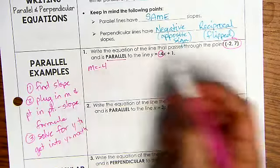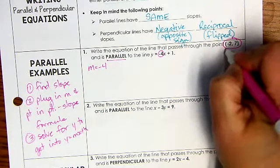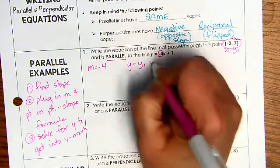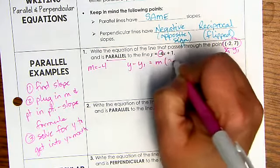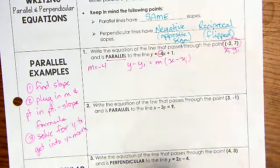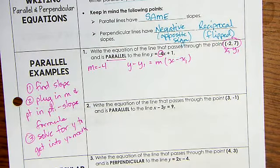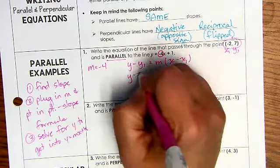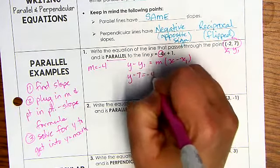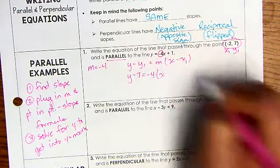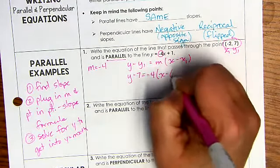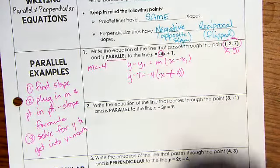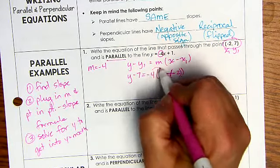I'm taking the slope and the point and remember this is x1, y1 and we're plugging into y minus y sub 1 and we plug in our information. So I'm going to have y minus 7 equals negative 4, open parentheses, x minus negative 2, double negative.